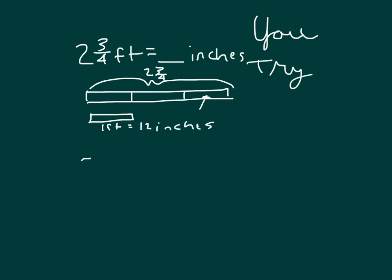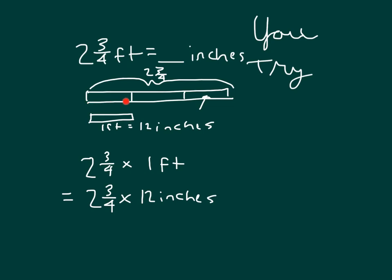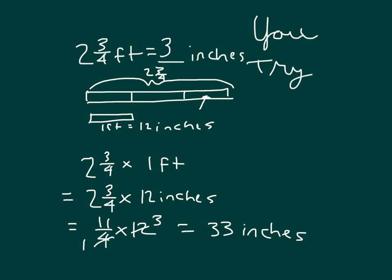Showing our work: it would be two and three-fourths times one foot, and one foot equals twelve inches. So that's twelve, twenty-four, and then this was three-fourths of twelve. Three-fourths of twelve is also equal to nine. So that was twelve, twenty-four, and nine — the answer should be thirty-three. Two and three-fourths as an improper fraction is eleven-fourths times twelve. Let's cancel, and we have eleven times three, which equals thirty-three inches. Two and three-fourths feet equals thirty-three inches.